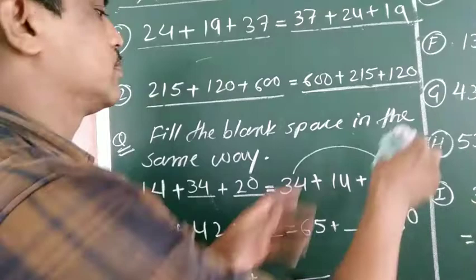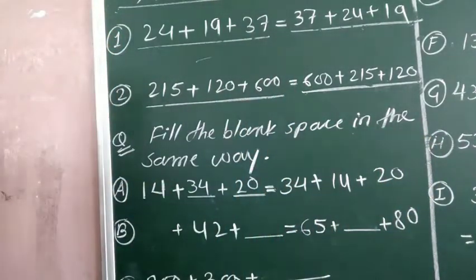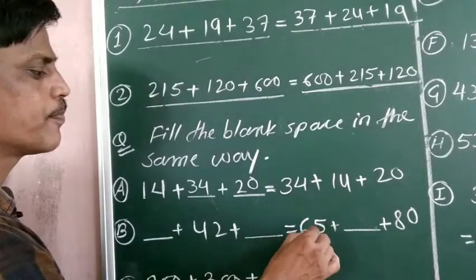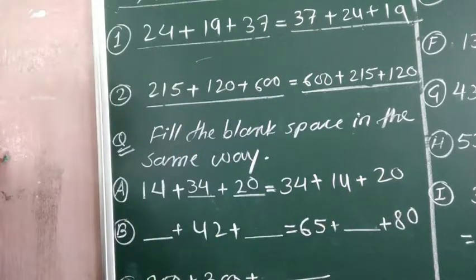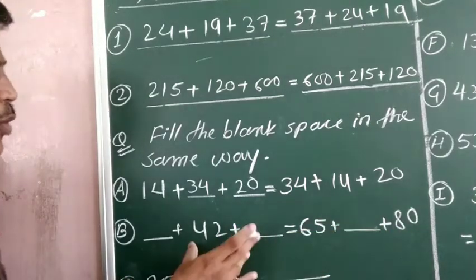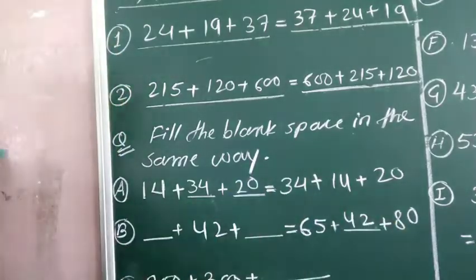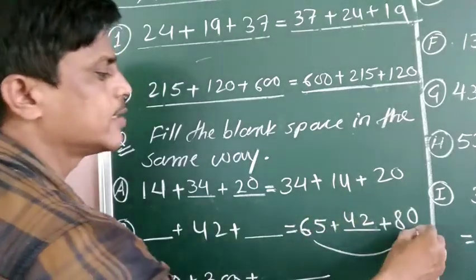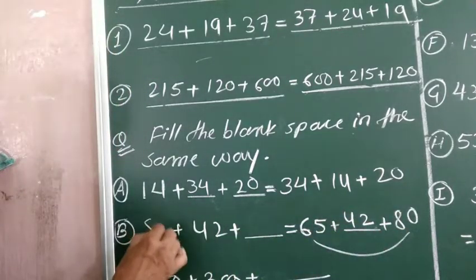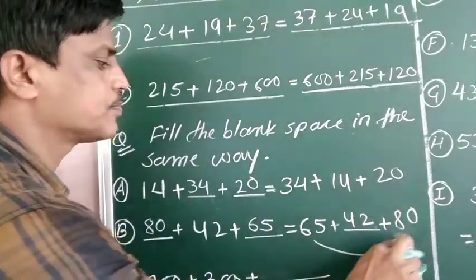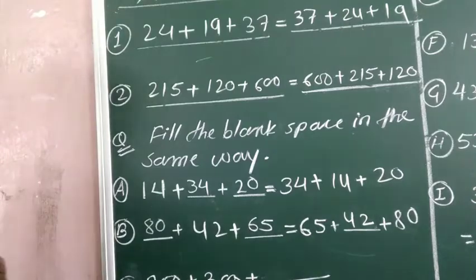Next: blank plus 42 plus blank equals 80 plus blank equals 80. Two numbers are given — 42 and 45 — and the number 42 is not in the right side, so we can fill 42 there. The two blank spaces can be filled with 80 and 65 in either order: if you write 80 here then write 65 there, or 65 here and 80 there.